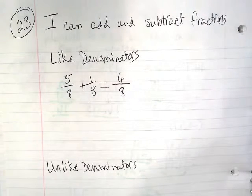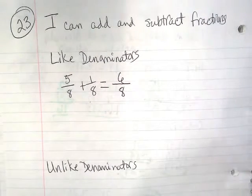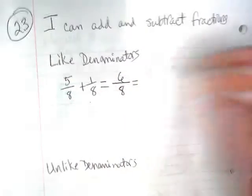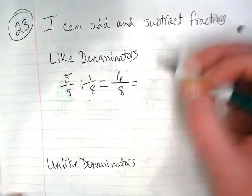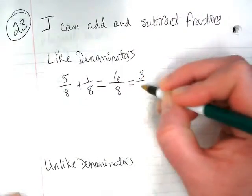But fractions can always be simplified. At least we need to always look and see if it's possible. Both 6 and 8 can be divided by 2, so this can be reduced to 3 over 4.